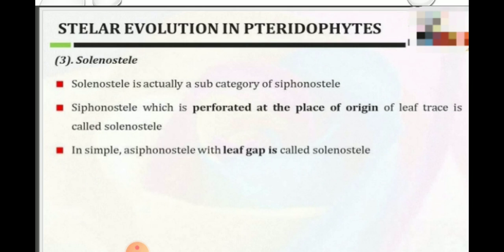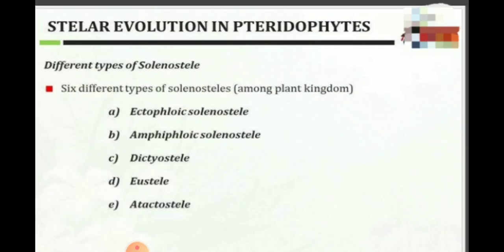The third type of stele is solanostele. It is actually a subcategory of siphonostele in which a leaf gap is present. Solanostele is further classified into ectophloic, amphiphloic, dictyostele, eustele, and atactostele.